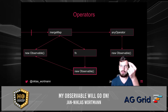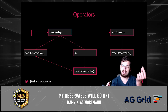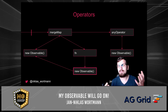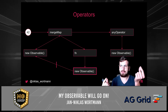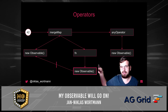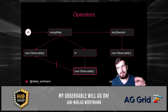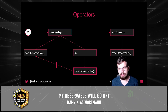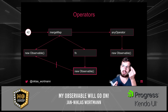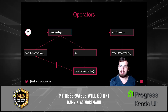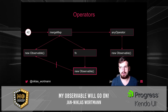Why won't complete be passed through? A complete on the source observable does not mean that the inner observable is completed yet. Imagine every emission created a new inner observable — just because the source observable completed doesn't necessarily mean the inner observable is completed too. Only the combination of inner observable completed and source observable completed will lead to the outer observable — everything after mergeMap — also receiving a complete signal.